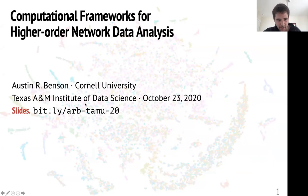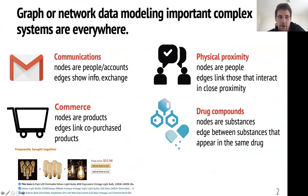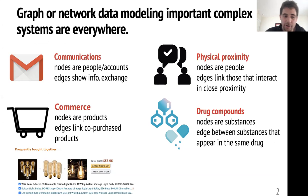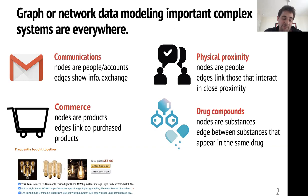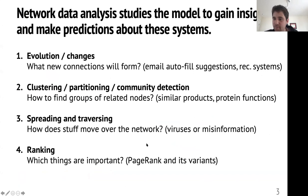As James was mentioning, I tend to study large-scale complex networks. We can think about these complex systems as graphs in a mathematical or computer science sense. This shows up all over the place — things like communication networks, where nodes might represent people or email accounts and edges show information exchange; physical proximity networks, where nodes are people and edges link people in close proximity — everybody's thinking about this for COVID; online commerce, where nodes might be products and edges link products purchased together; and drug compounds, where nodes are substances and edges connect substances appearing in the same drug.